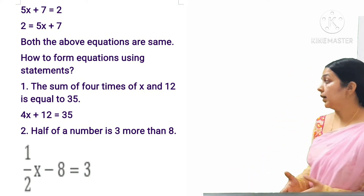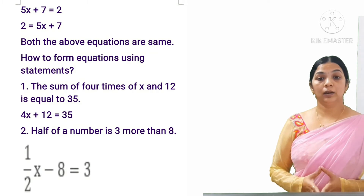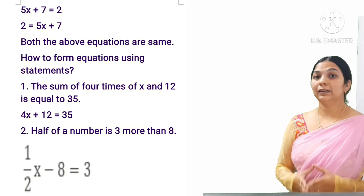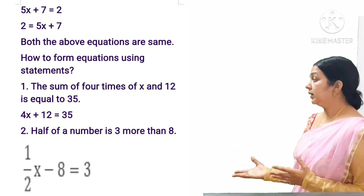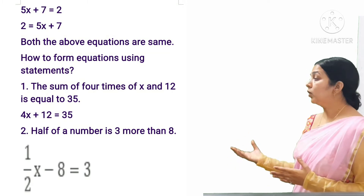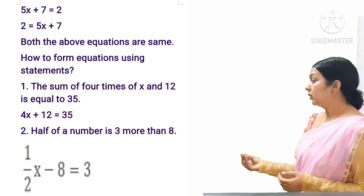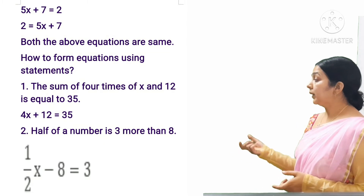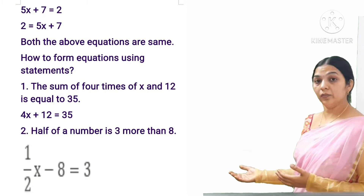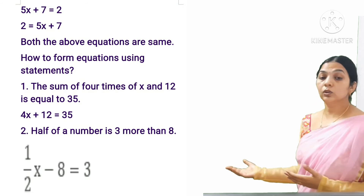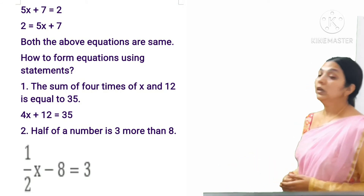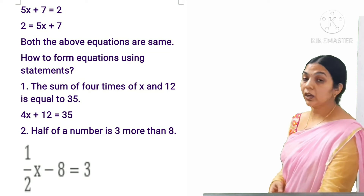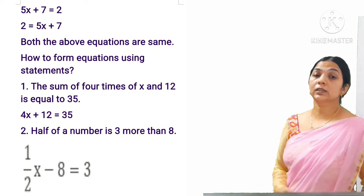Let's take the second example: 'Half of a number is 3 more than 8.' Here we take the unknown number as x. So half of x, and when we subtract a from this half of x, the result is 3. So the equation is (1/2)x − a = 3.